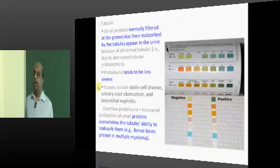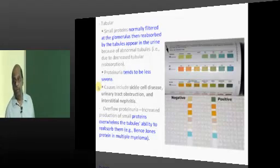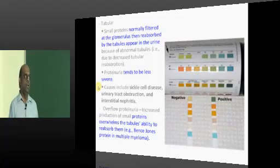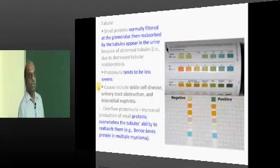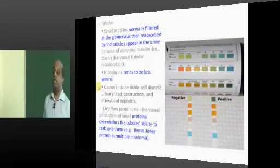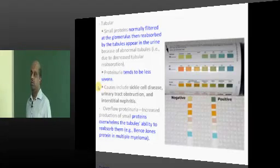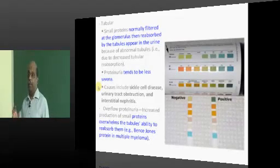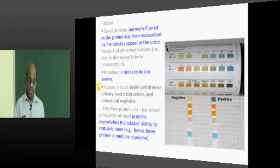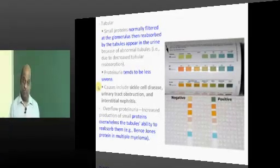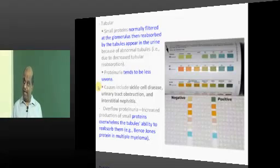What leads to tubular damage causing tubular proteinuria? Where are the tubules located? Renal medulla, which is highly vulnerable to sluggish blood flow and ischemic injury. If the patient has sickle cell anemia, that leads to blood flow in the renal medulla becoming more sluggish and can lead to tubular damage.